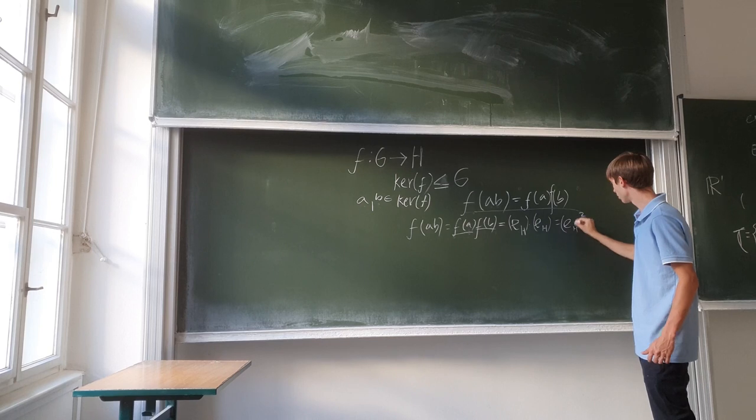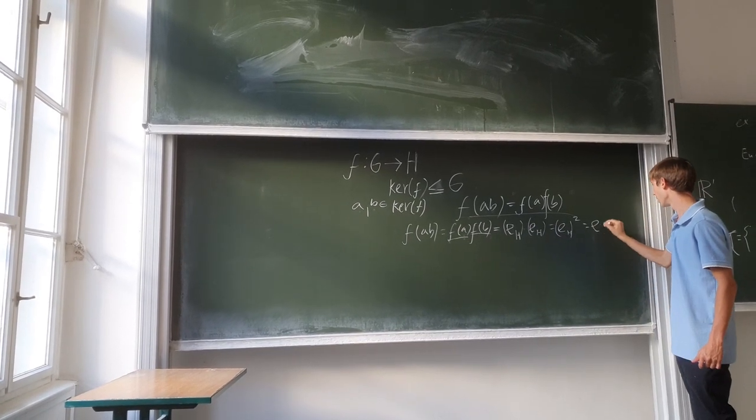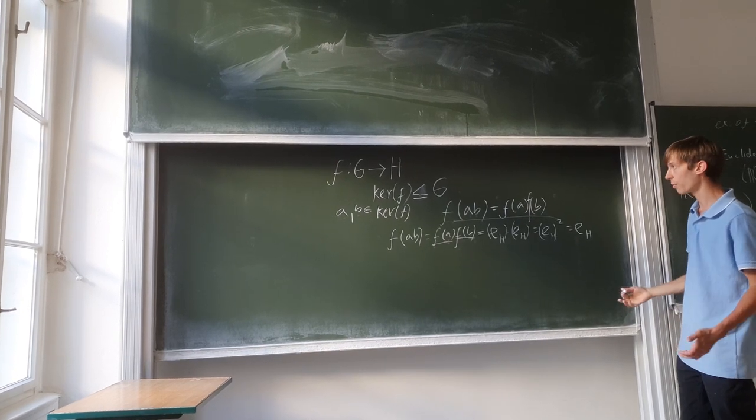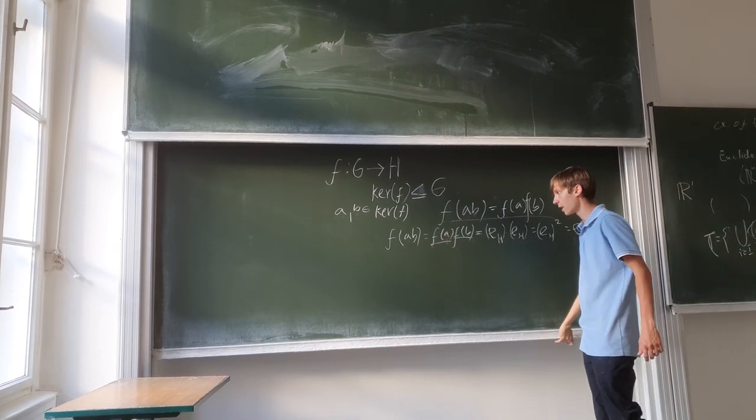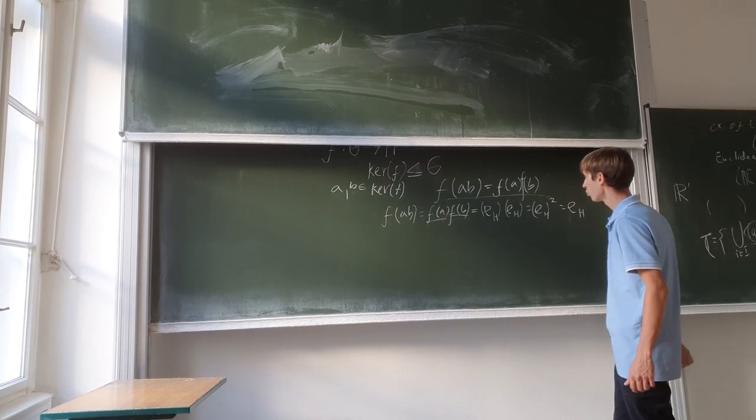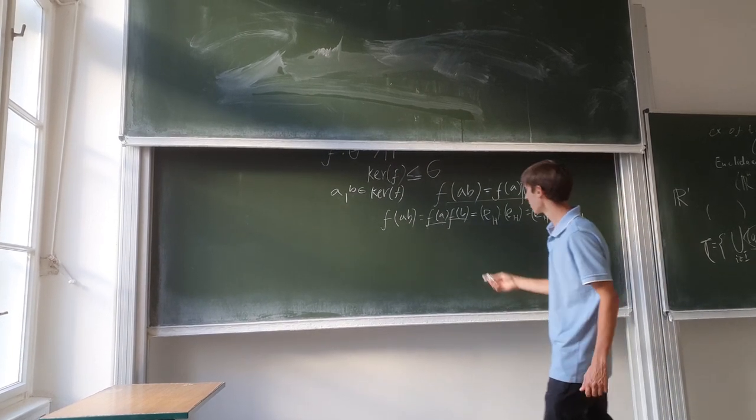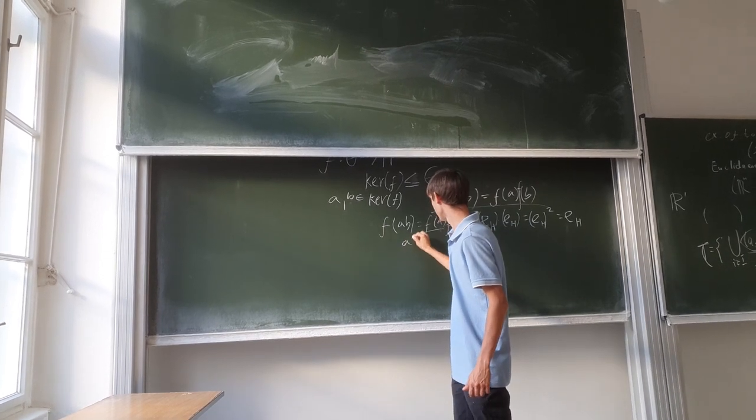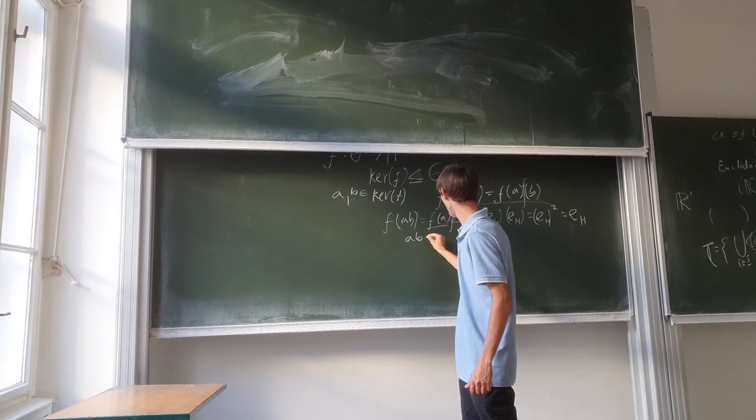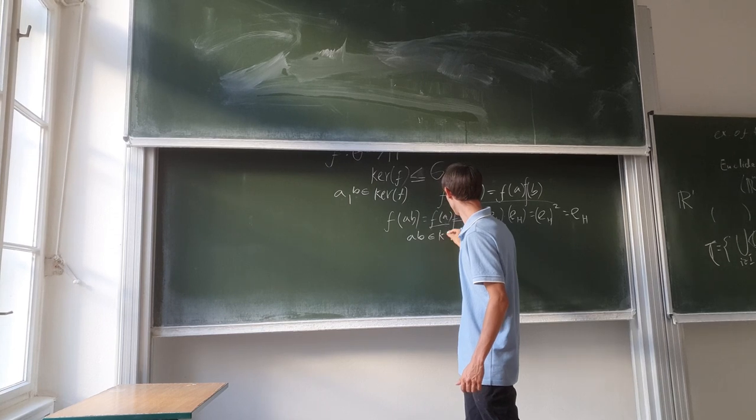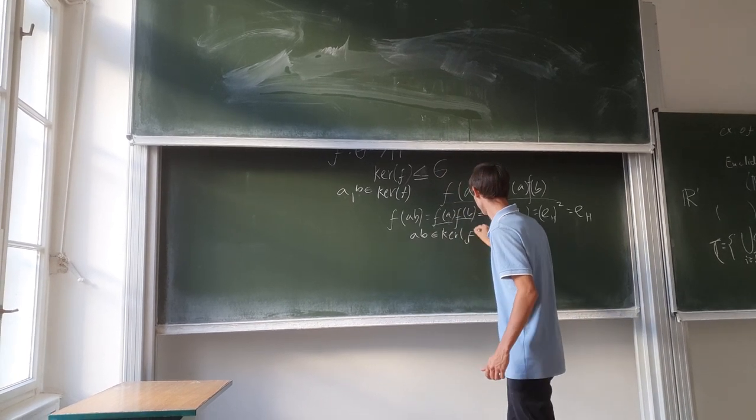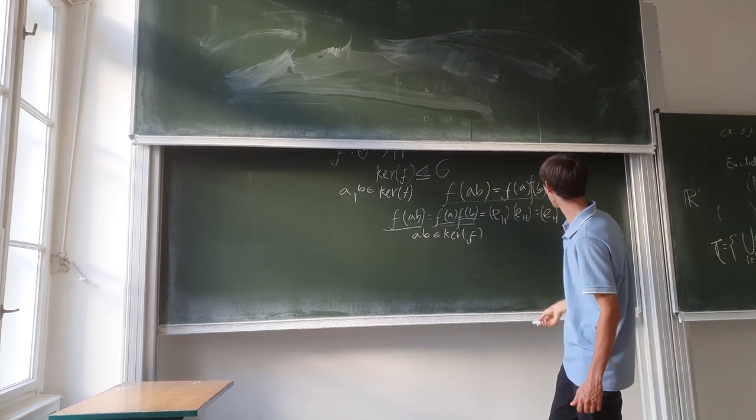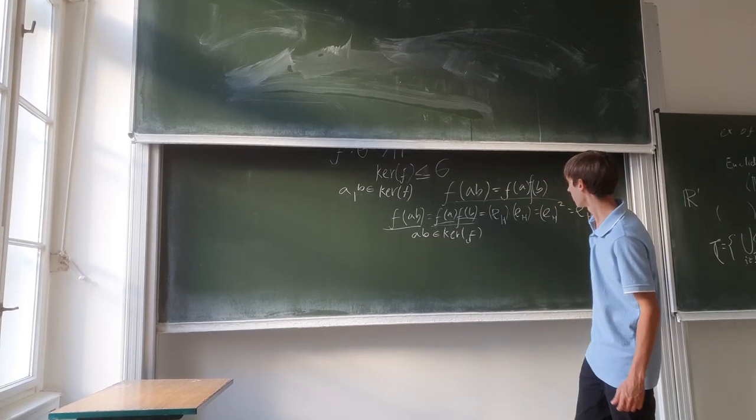If we have these two things together, identity to the second power - as we know from experience, identity to the second power is still the identity. By this, we have now shown that ab also belongs to kernel f.